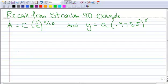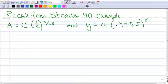I recall from the example a couple days ago when we talked about strontium-90. Strontium-90 is a radioactive material, has a half-life of 28. And so we came up with this equation right here for the half-life for strontium.